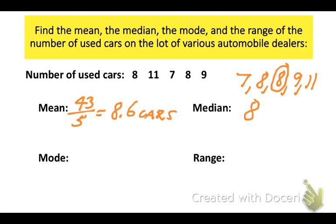The mode is the number that appears the most often. In this case, there are two 8's, so that's the mode. So the mean, the median, and the mode are three ways to look at what the data is tending to do.